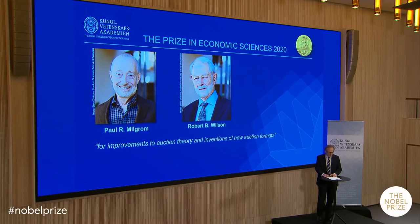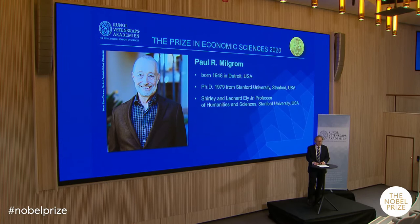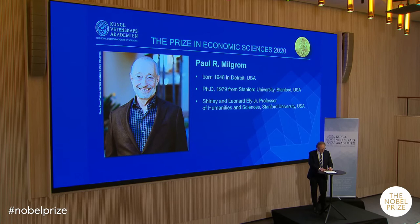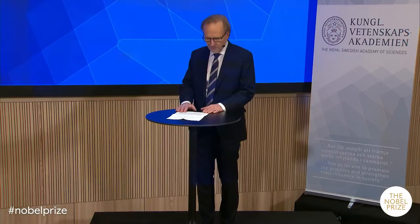Paul Milgram. After taking an undergraduate degree in mathematics in 1970, Milgram left university for a career as an actuary. Fortunately for us all, he returned back to university after five years in the insurance industry, earning a master's degree in statistics and a doctorate in business. His doctoral dissertation, which he defended in 1979 at Stanford University, revolutionized the theory of auctions.